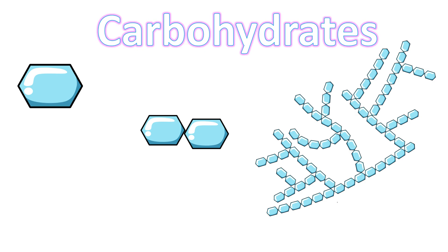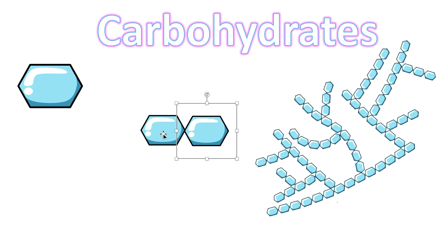Carbohydrates can exist in various forms — as a single unit, as a combination of two of those units, or as long chains of them to make a huge structure. You can see that carbohydrates are macromolecules that can exist in many sizes.